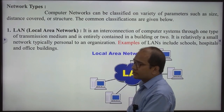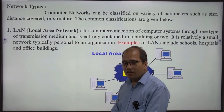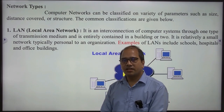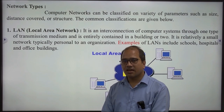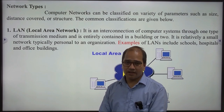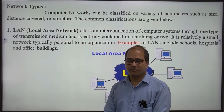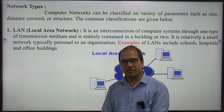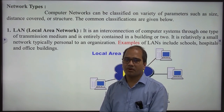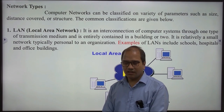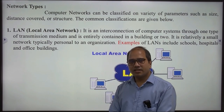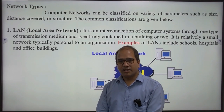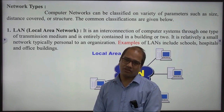अब बात करते हैं networks के types की। Computer networks को हम basically तीन types में divide करते हैं — पहला है LAN (Local Area Network), दूसरा है MAN (Metropolitan Area Network), और तीसरा है WAN (Wide Area Network)। ये तीनों categories इनके geographical distance coverage के हिसाब से classify होती हैं।